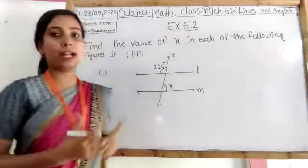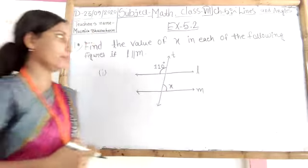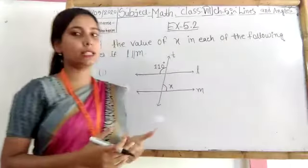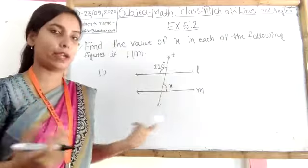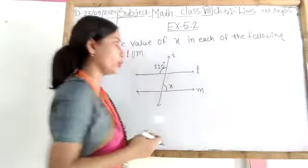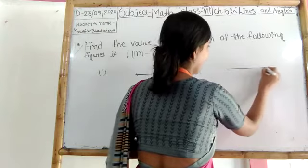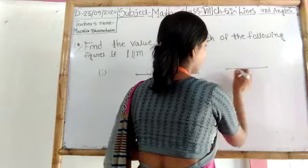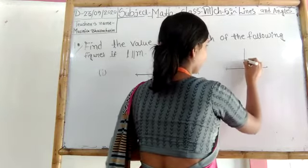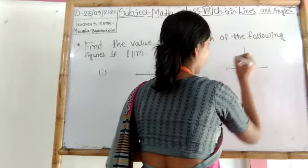So first of all we should again understand about linear pair. In previous classes also I discussed about linear pair, today again I discussed about it. So on this linear pair I draw one straight line and upper two straight lines. Here I again draw another straight line.